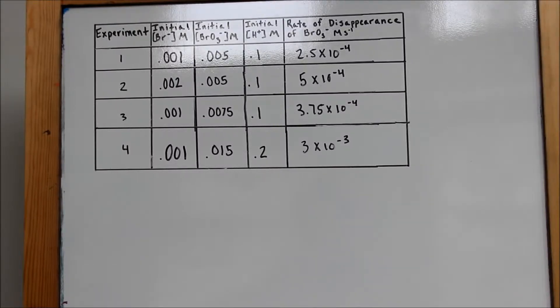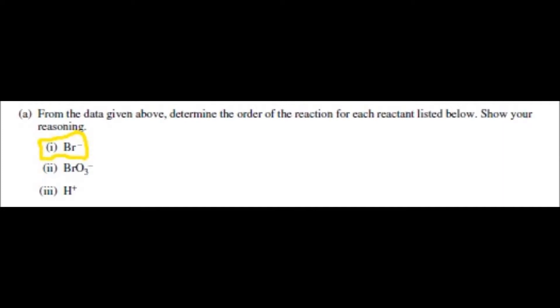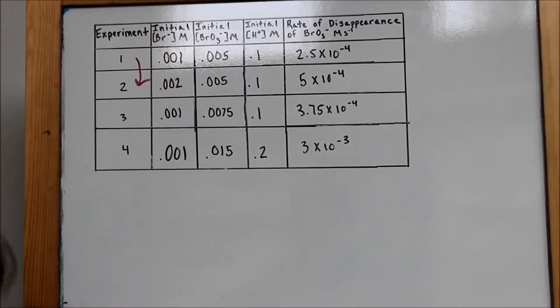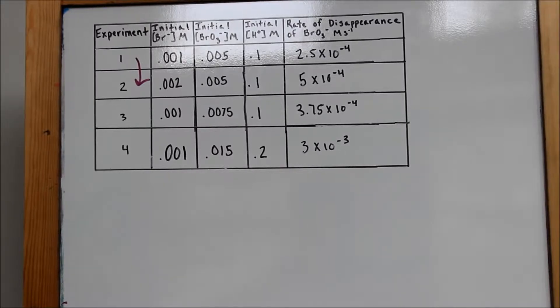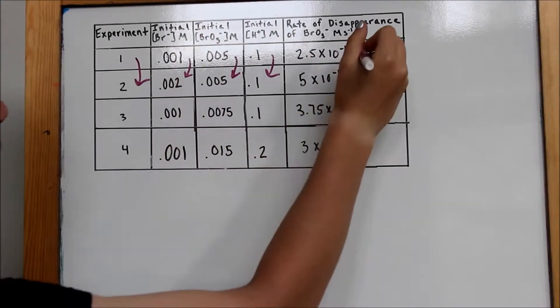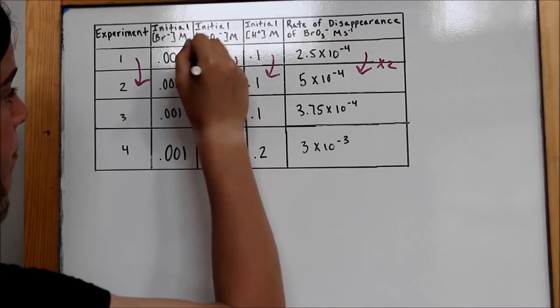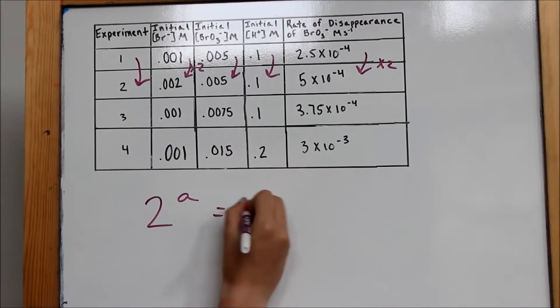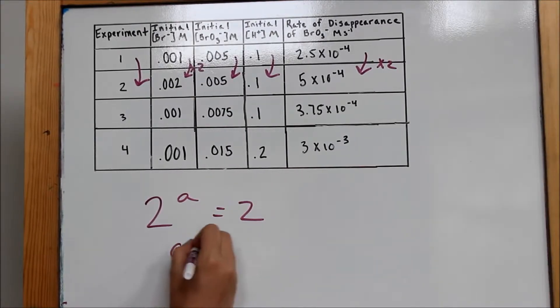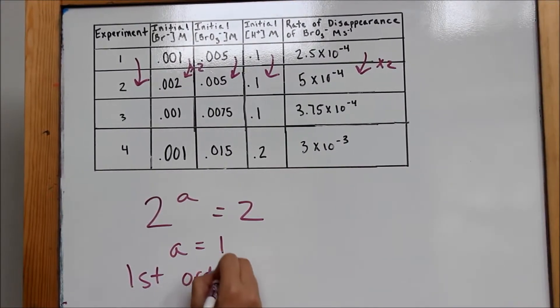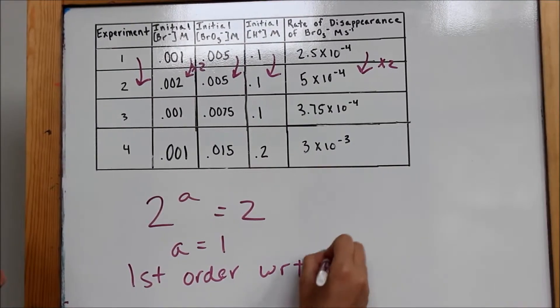Part A, letter I. To find the order of Br-, we will verbally compare experiments 1 and 2, because the other reactants, BrO3- and H+, remain the same, while Br- and the rate are both multiplied by 2. Therefore, 2 to the A equals 2. And in solving this equation, we see that A equals 1. So we know that it is first order with respect to Br-.